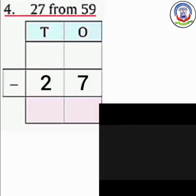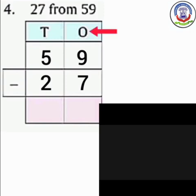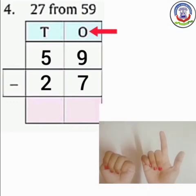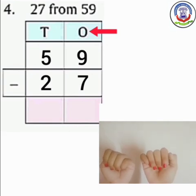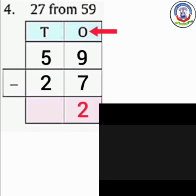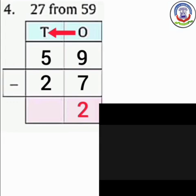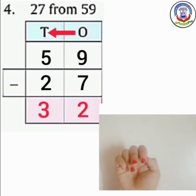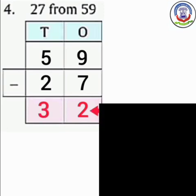Number 4: 27 from 59. तो पहले हम ones column में subtract करेंगे. Numbers are 9 and 7. Open 9 fingers and close 7 fingers. How many fingers are left? 1, 2. So we will write here 2. अब हम 10s column में subtract करेंगे. Numbers are 5 and 2. Open 5 fingers and close 2 fingers. How many fingers are left? 1, 2, 3. So we will write here 3. The difference is 32.